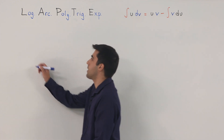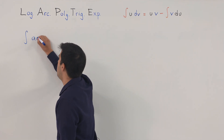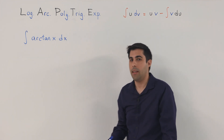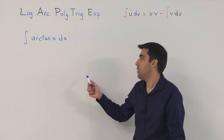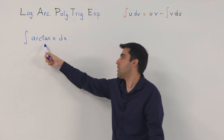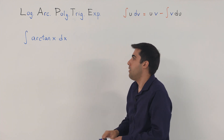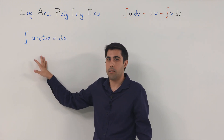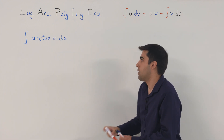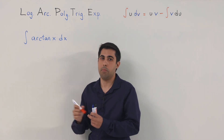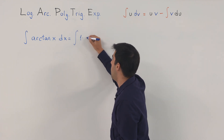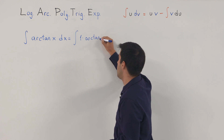Our second example is the integral of arctangent of x dx. You might say there is no product here, because you only see an inverse trigonometric function. However, even if there is no explicit product, you can still apply integration by parts by considering 1 as a factor. So this integral is the same as the integral of 1 times arctangent(x) dx.